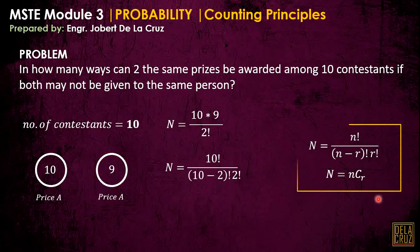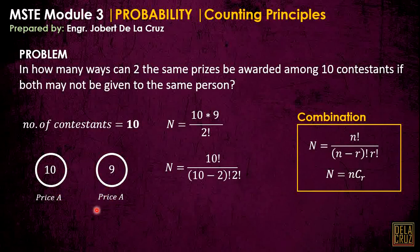The key distinction: in permutation, the arrangement is distinct — one arrangement cannot be interchanged with another. In combination, we disregard arrangements since all items are identical. Prize 1 and Prize 2 are interchangeable, so we can place the two persons anywhere. To understand better, let's solve an example.